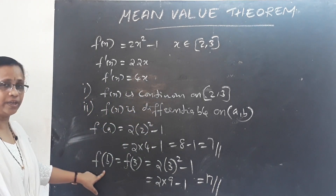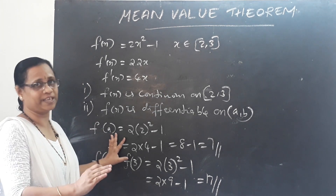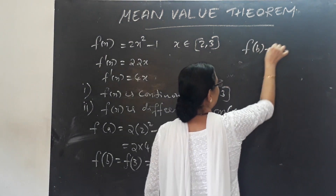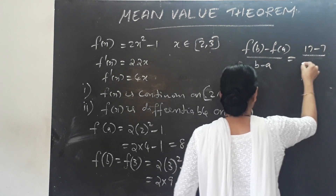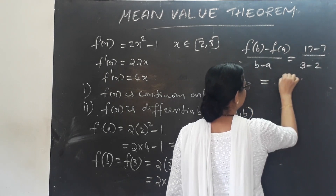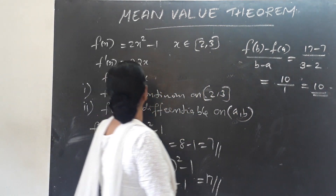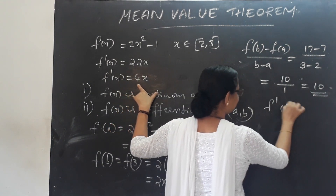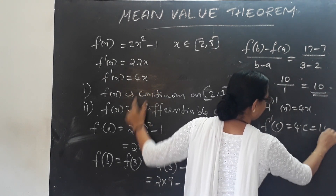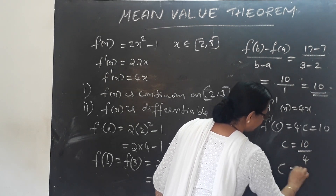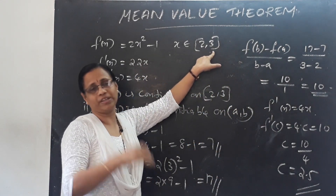Computing f(B) = f(3): 2(3²) − 1 = 18 − 1 = 17. Applying the Mean Value Theorem formula: [f(B) − f(A)] / (B − A) = (17 − 7) / (3 − 2) = 10 / 1 = 10. Setting F'(C) = 4C = 10, we get C = 10/4 = 2.5, which lies in (2, 3). Mean Value Theorem is verified.